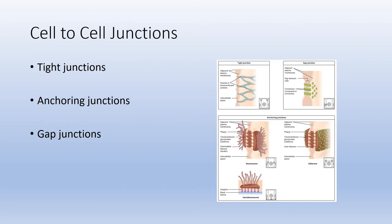Epithelial cells have what we call cell-to-cell junctions — a means of connecting cells together. There are three main types: tight junctions, anchoring junctions, and gap junctions. Gap junctions look like little pores between adjacent cells so fluid can flow between them. Tight junctions hold cells very tightly together, essentially making an almost waterproof seal. Anchoring junctions are often described as being almost like rivets that help hold adjacent cells tightly together.